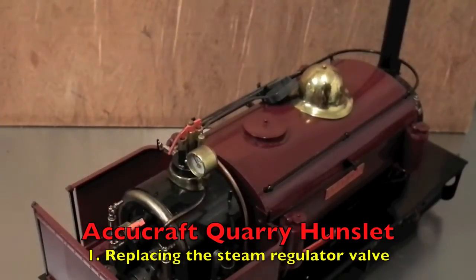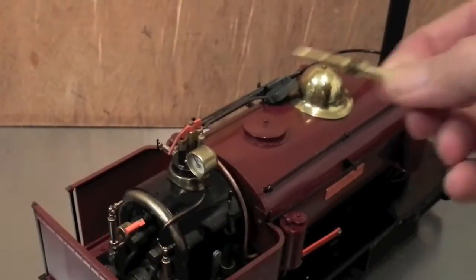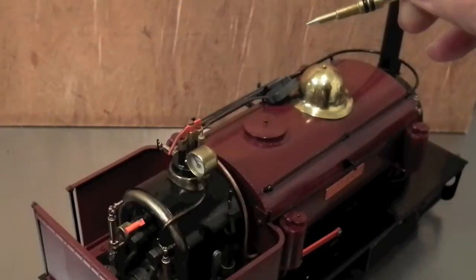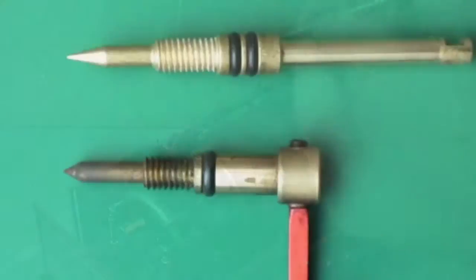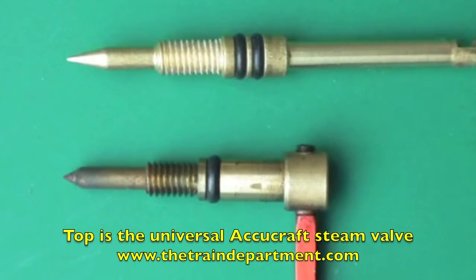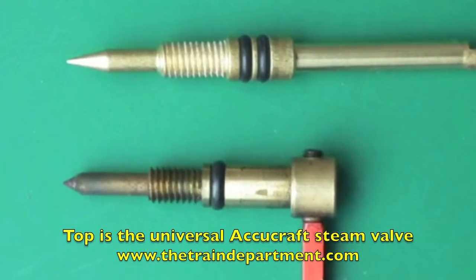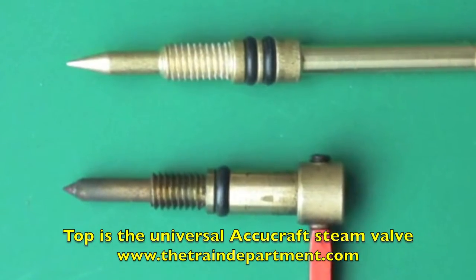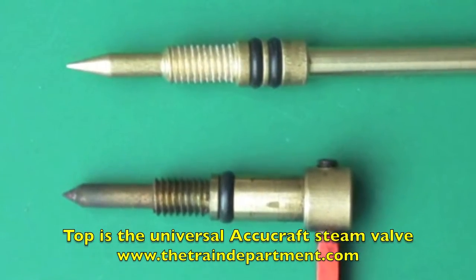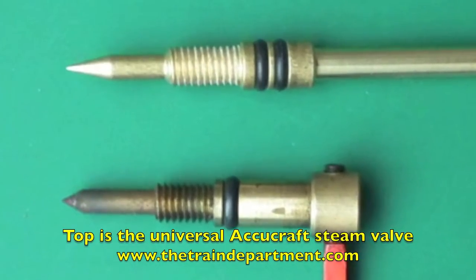Here I have the AcuCraft Quarry Hunslet and what I'm going to do is fit one of these new steam control or regulator valves from the Train Department in the USA. This has a very fine taper which will give finer control.